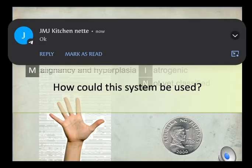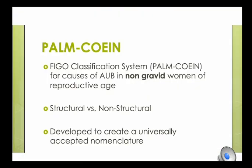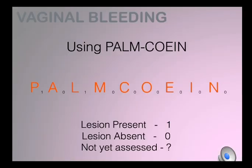The PALM-COEIN classification is only for non-gravid women of reproductive age presenting with abnormal uterine bleeding. We already have a checklist of probable causes of AUB, and we indicate subscript 1 if the lesion is present, 0 if it is absent, or a question mark if it has not yet been assessed.